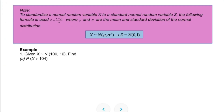Let's continue to standardize a normal random variable X to a standard normal random variable Z. The formula used is Z equals X minus mean divided by standard deviation. In normal distribution, X is distributed with mean and variance, and we change it to the standard normal random variable Z where the mean is zero and variance is one.